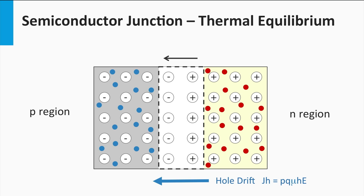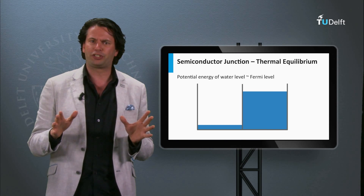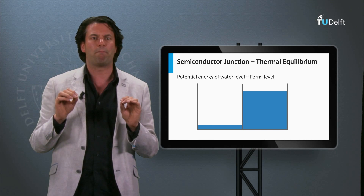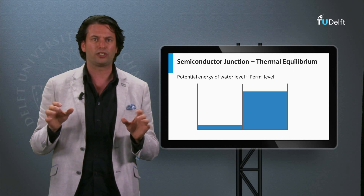Increasing the drift current density can be accomplished by either increasing the density of the minority charge carriers, or by increasing the electric field E over the depletion zone. In this example, the p-n junction is in thermal equilibrium. The current densities at the depletion zone are in equilibrium. If you would connect the left side of the p-region and the right side of the n-region with an electrical circuit, we would have no current flowing through the circuit. The electrical field will create a built-in voltage over the space charge region. The origin of the built-in voltage can be demonstrated by looking at the electronic band diagram of a p-n junction. In a p-n junction in thermal equilibrium, the Fermi level is constant across the entire junction.